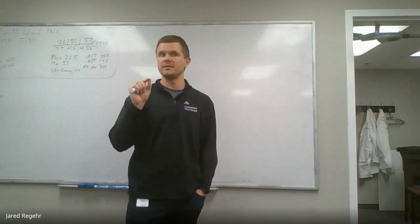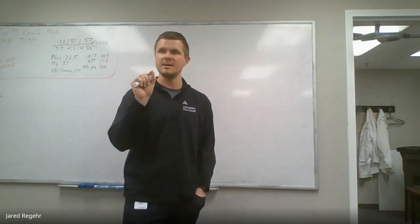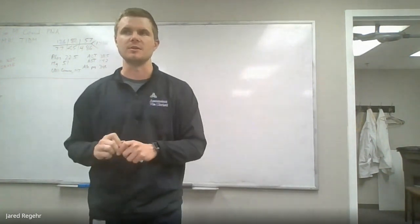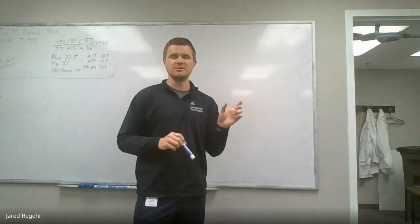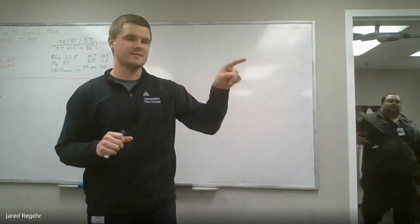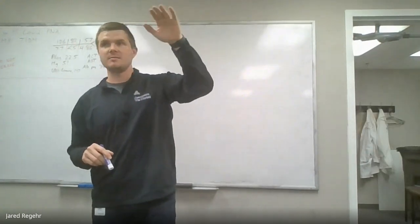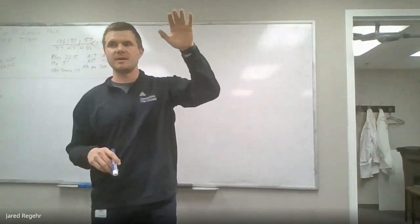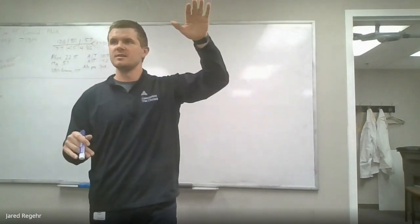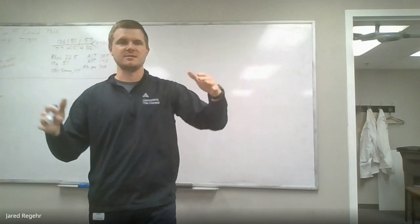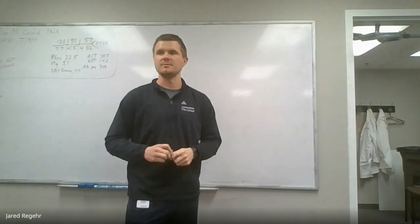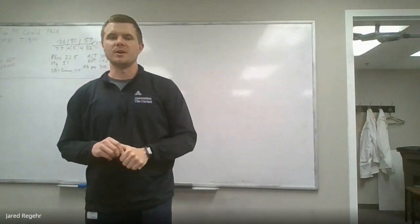Knowing the exact definitions of an early deceleration, a late deceleration, and an acceleration — including the timing differences based on gestational age — is important. A quick review: an acceleration before 32 weeks is 10 by 10 — it gets up to at least 10 beats per minute above baseline and finishes at least 10 seconds from the start. It doesn't have to stay up 10 beats for the entire 10 seconds — just start, get up there, and finish at least 10 seconds later. If greater than 32 weeks, it's 15 by 15.